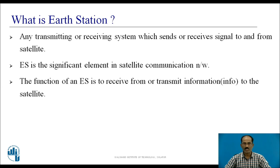The function of an Earth Station is to receive from or transmit information to the satellite. In the uplink, the Earth Station transmits information from the Earth Station to the satellite, whereas in the downlink, the satellite transmits back to the Earth Station.